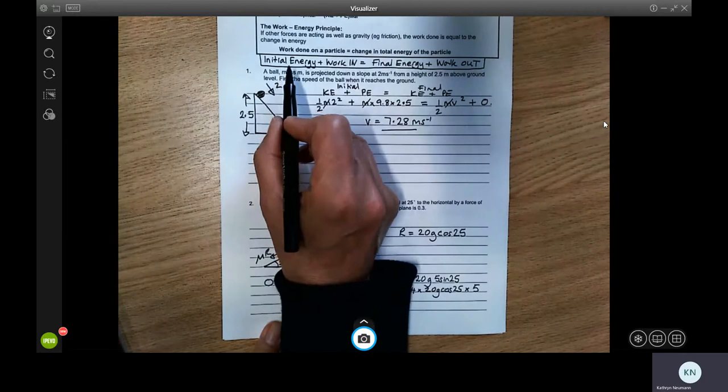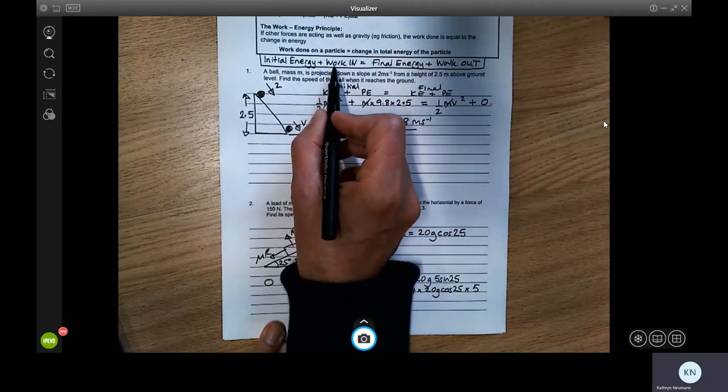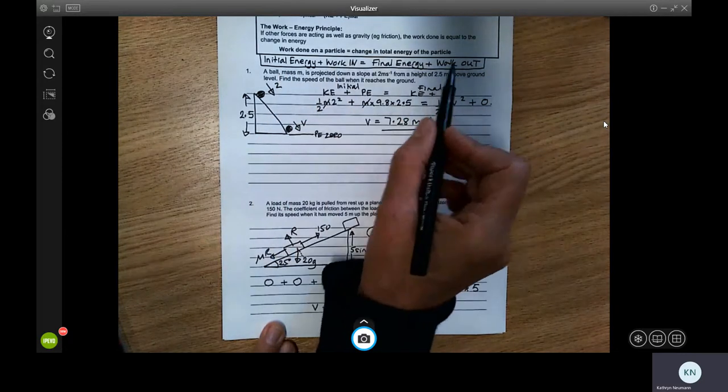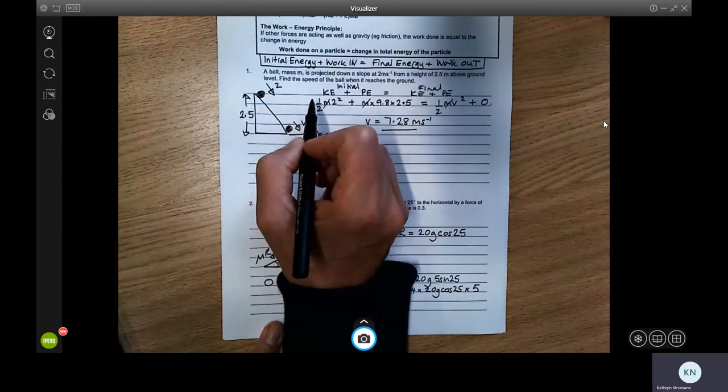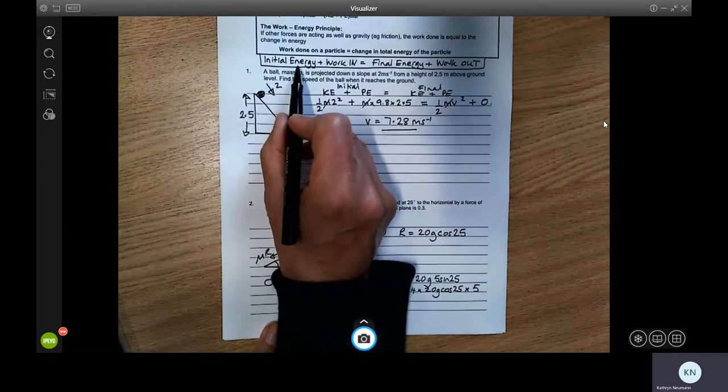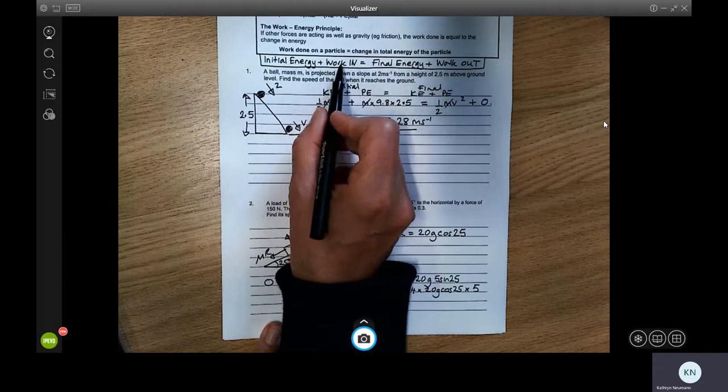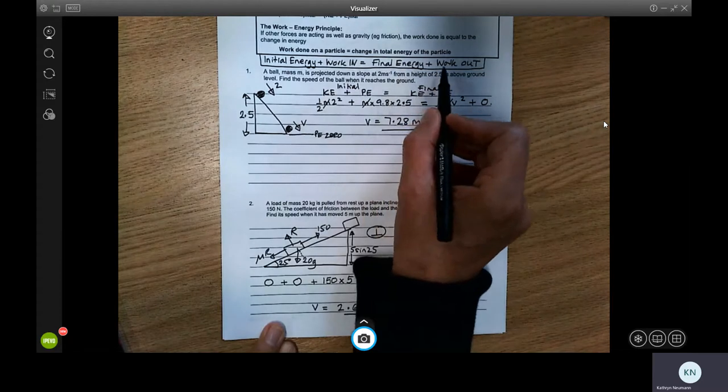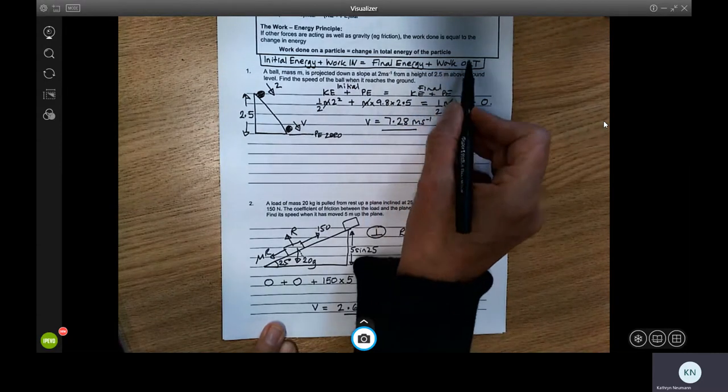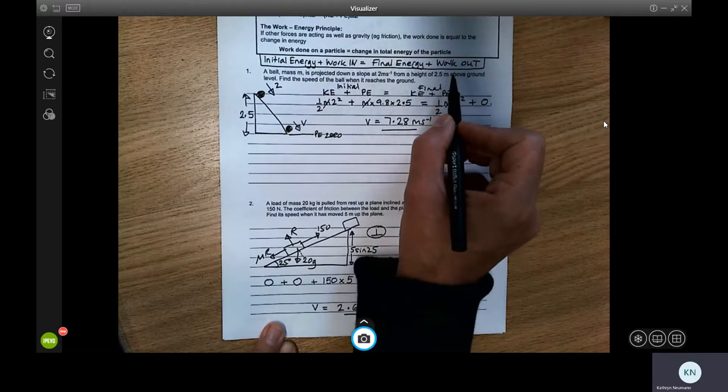But if there are two forces acting, for instance you're pulling something with a rope and it's having to overcome friction, it's more useful to use this form of the work energy equation. And that says that the initial energy of the system plus the work put into it, for instance by an engine or by a rope pulling something, is equal to the final energy plus the work that comes out of the system overcoming resistance.